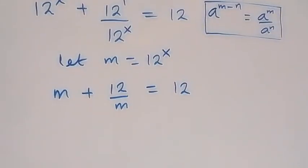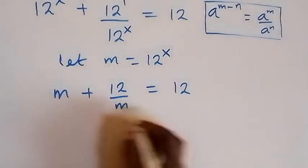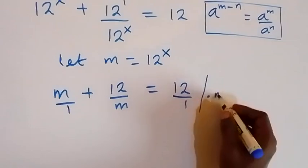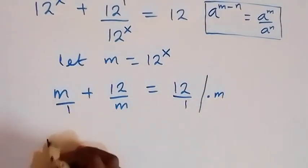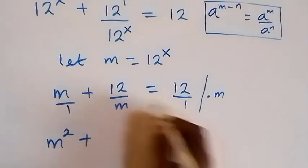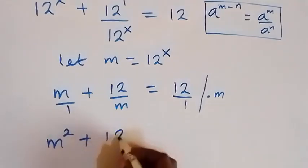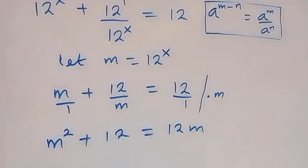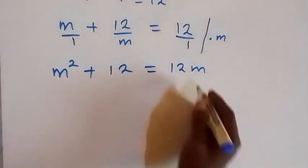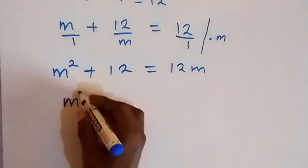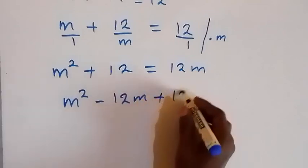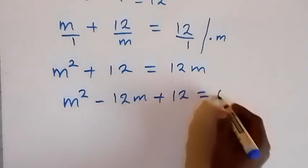We can clear the fraction by multiplying through by the LCM. In this case the LCM is m. Multiplying through by m: m times m gives m squared, and m times 12 over m, m cancels, giving 12. That equals m times 12, which is 12m. Taking 12m to the other side gives us m squared minus 12m plus 12 equals 0.